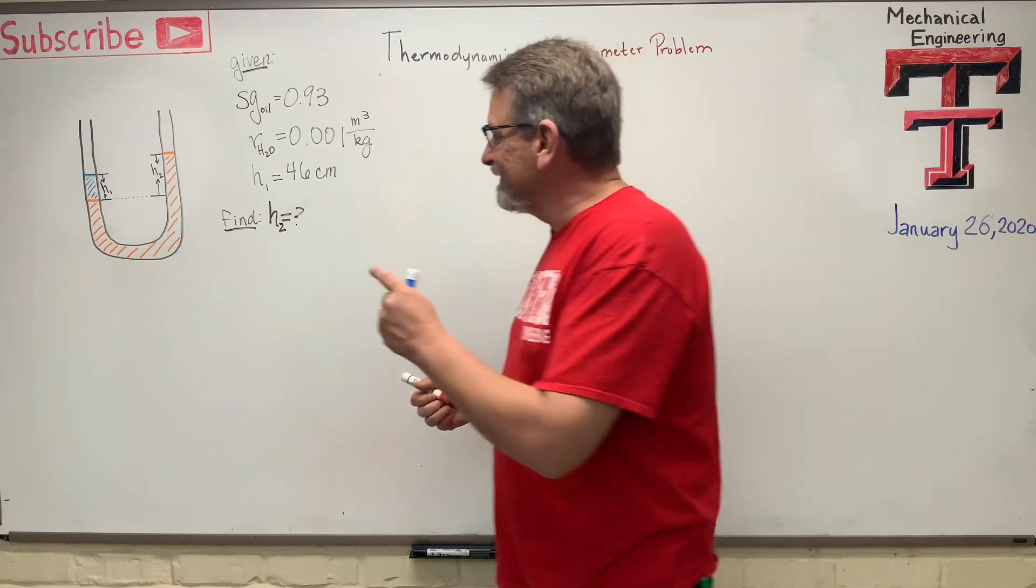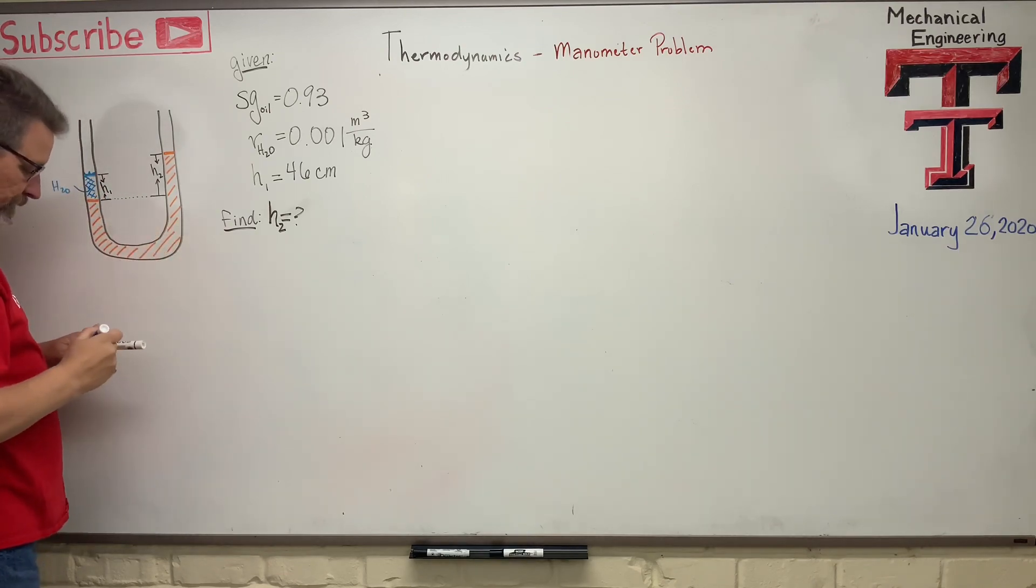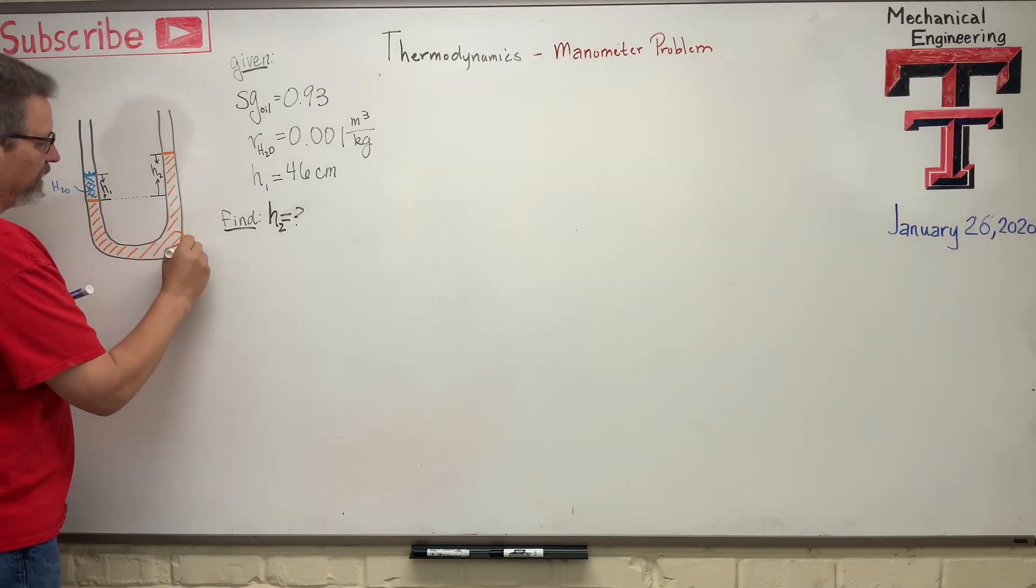Let's start off looking at this guy. We have a U-shaped manometer, and it's open to the atmosphere. We're given a few things about this manometer. So this, the blue, this area in here, we should have made that waves because the international sign of water is waves, right? This is water, H2O. This over here, the orange, is oil.